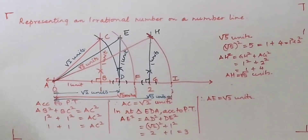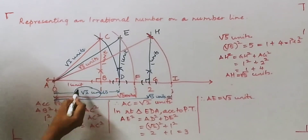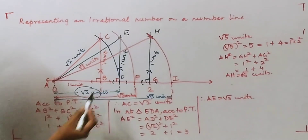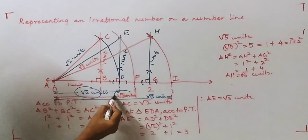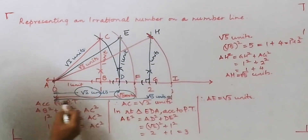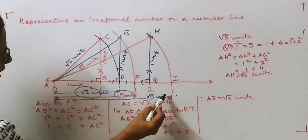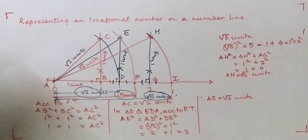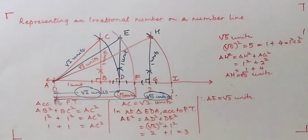To sum it up: we saw √2 units from A to D, √3 units from A to F, and √5 units from A to I. I hope you have understood how to construct and represent an irrational number on the number line. Thank you for watching.